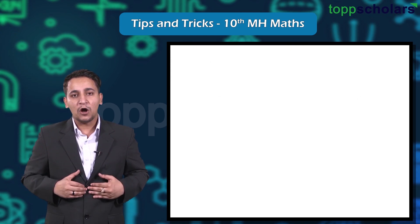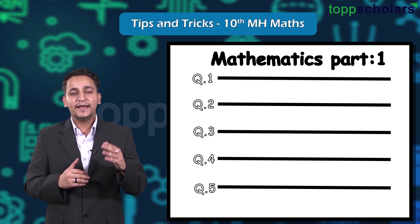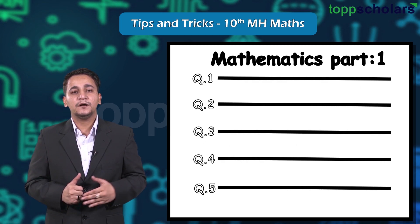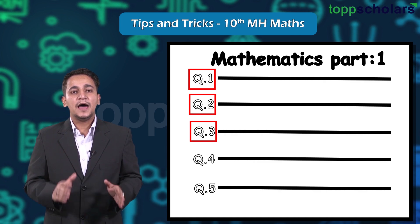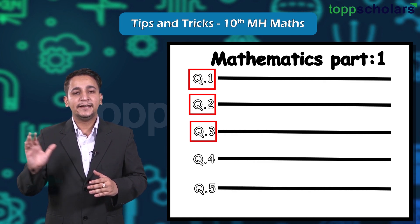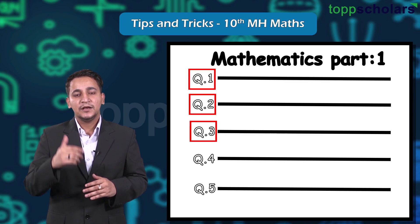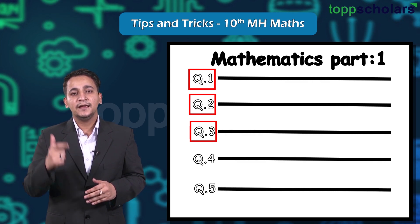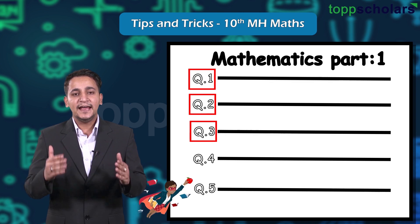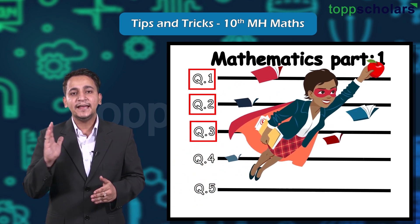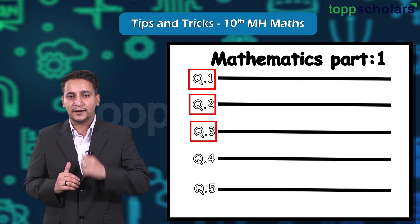Now if we talk about these questions, we can see that question numbers 1 to 3 are directly related to the textbook. If a student has rigorously practiced the textbook questions, then the student can easily attempt question numbers 1 to 3.